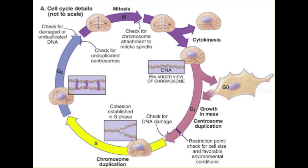Both cyclin binding and phosphorylation are required for activation of CDK enzymatic activity. Negative regulation of CDKs is important for growth regulation during G1 and G2 phases of the cell cycle, as well as cell cycle arrest in response to DNA damage and anti-proliferation signals. CDKs are inhibited by phosphorylation of residues adjacent to the ATP binding site and by binding of inhibitory proteins.